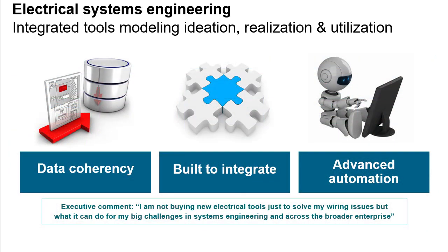All of this was built with three core principles in mind. Data coherency ensures that all domains work with correct, synchronized, and managed data. Capital was built to integrate so that data coherency extends beyond just Capital but into adjacent processes. And advanced automation of complex tasks creates better designs faster. These principles deliver the world's most powerful electrical systems engineering tools, which are quite different from traditional drawing-based tools.